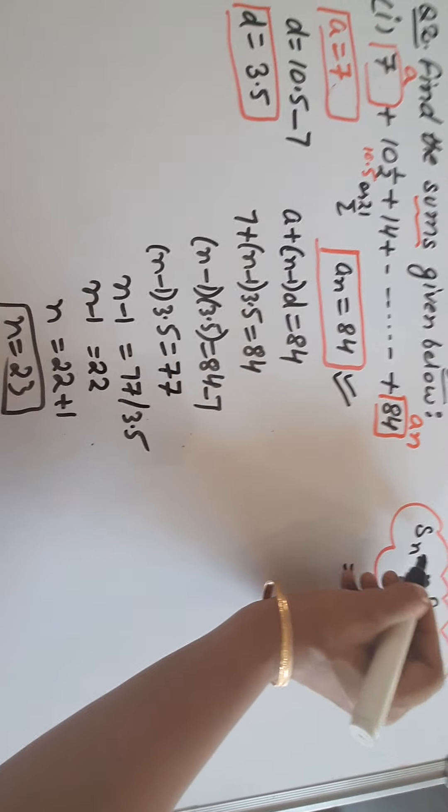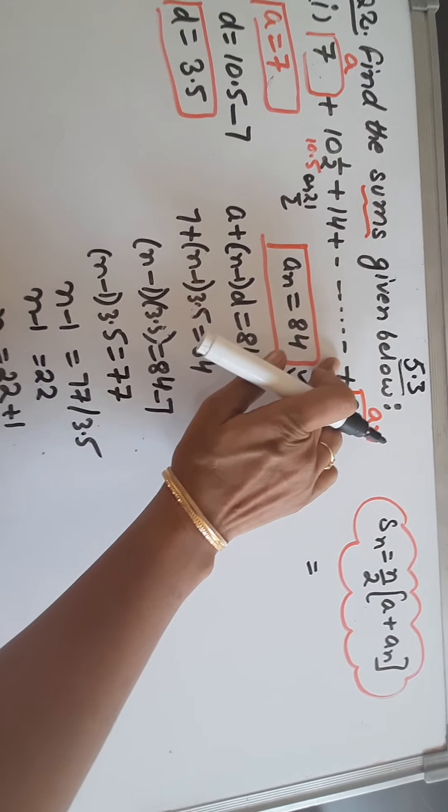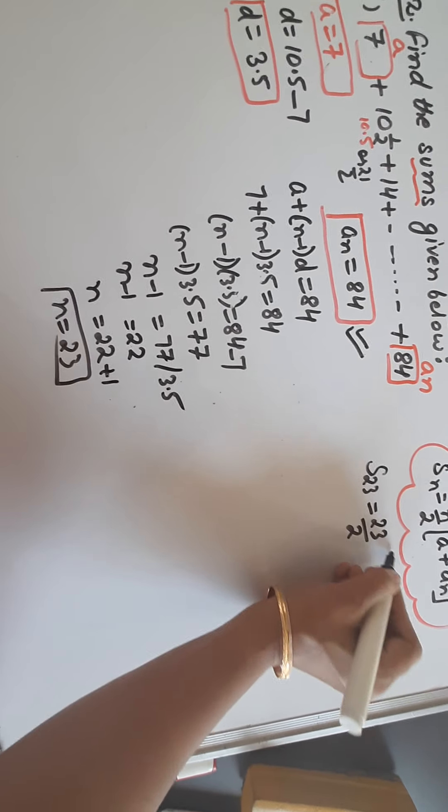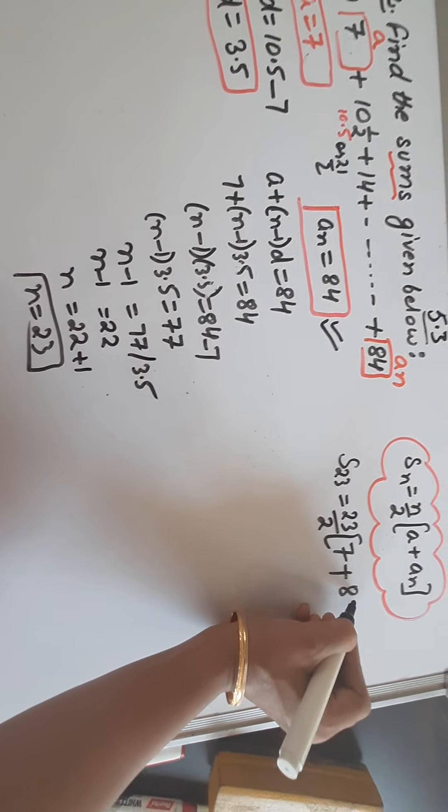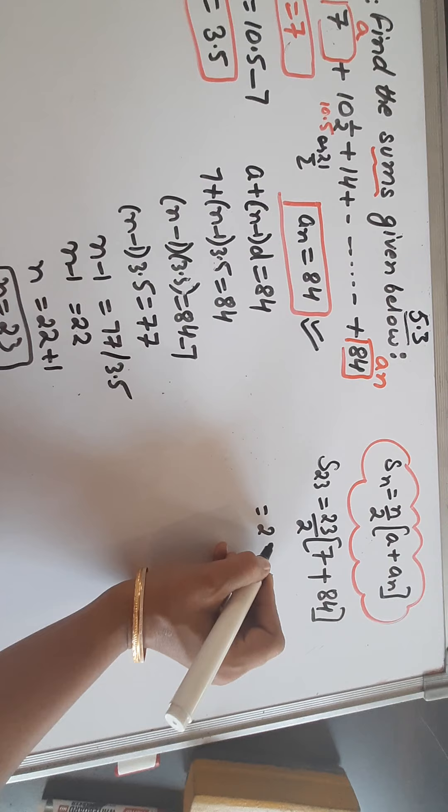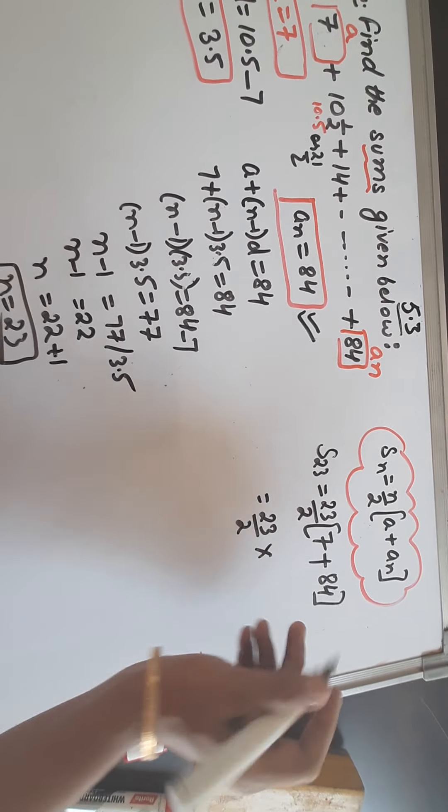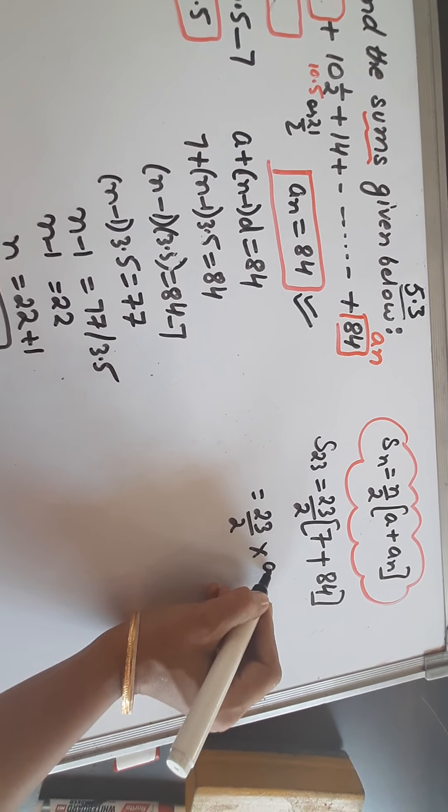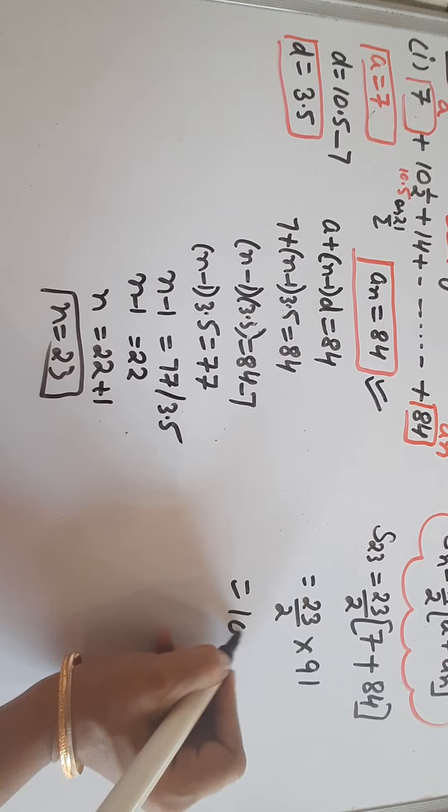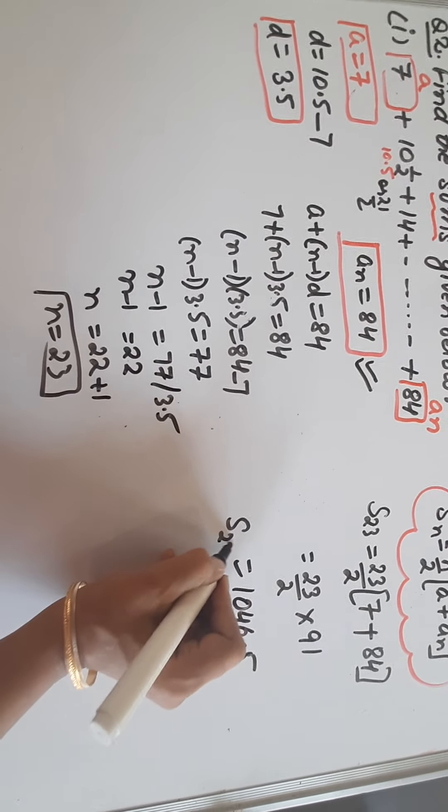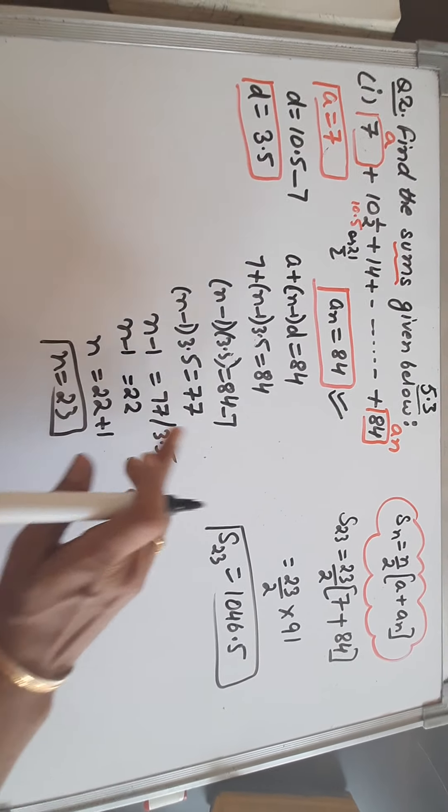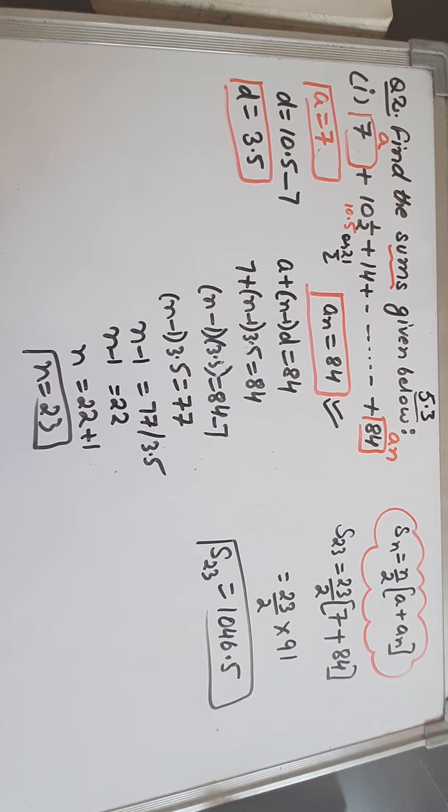Now let us find out the sum of 23 terms. Sum of 23 terms: N is 23 by 2 into A is 7 plus AN is 84. When AN is given, our calculation becomes shorter. So 23 by 2 into 7 plus 84 is 91. By solving it, you will get the sum of all these 23 terms is 1046.5. So when AN is given, always start the question from AN formula to get the value of N.